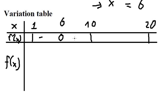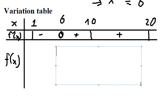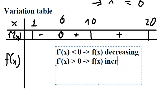So the sign from 6 to 10 is positive, and since there is only one solution in this region, the sign stays positive through to 20 as well. Applying the formula: if the first derivative is negative, the function f(x) is decreasing; if the first derivative is positive, the function is increasing.